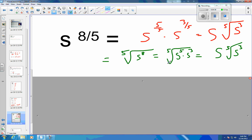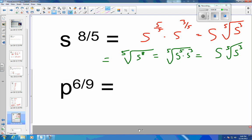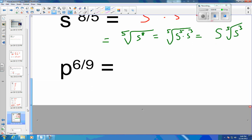It might be easier to simplify your fraction on the outside though. So 6/9, 6/9 reduces. So this is going to be both divisible by 3, so that's going to be a 2/3. And so then this is going to be, putting it back into a radical, 3 on the outside and p squared on the inside.